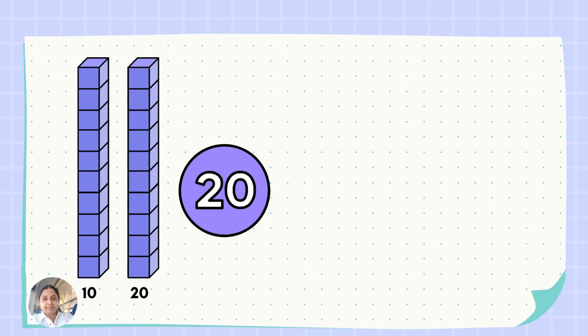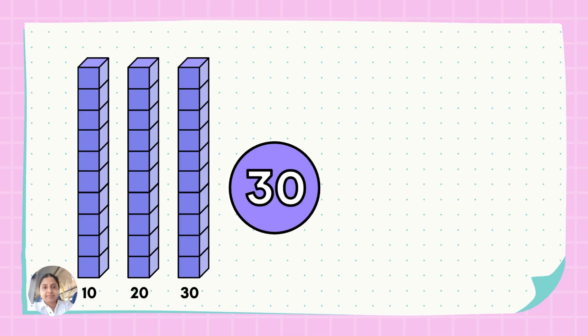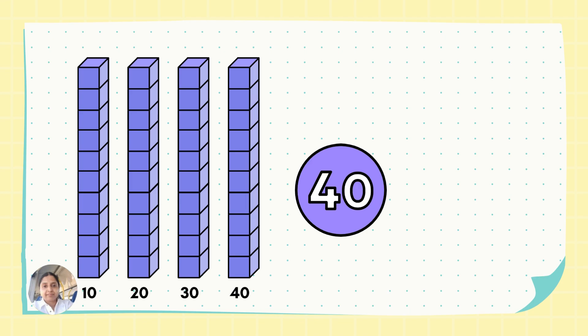We start with one rod block. Place another rod block next to it — now we make twenty. To represent number thirty using the base ten blocks, we need three rod blocks and arrange these side by side. Continue adding rod blocks while counting. So now we have four rod blocks, or simply number forty.